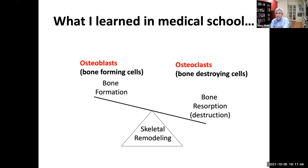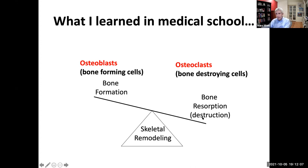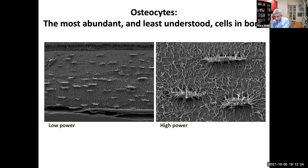First: bone is alive. Understanding that bone is alive is extremely important in thinking about how we approach treatment for osteoporosis. In school we learn that you have two processes happening at once: bone being built by osteoblasts, and bone being destroyed by cells called osteoclasts. It's this balance between bone formation and bone resorption — bone destruction — that determines how much bone you have. That process is called skeletal remodeling. As we start talking about treatments for osteoporosis, it's important to remember which process the treatments act upon.